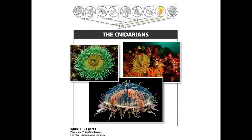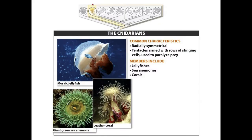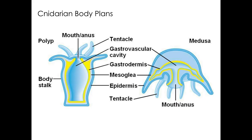Another group of invertebrates are the cnidarians, which include sea anemones, corals, and jellyfish. This phylum includes about 11,000 species. The animals all have defined tissues and radial symmetry, and are generally simpler than bilaterally symmetrical invertebrates. There are two types of cnidarian bodies: a sessile polyp and a free-floating medusa. In some species, individuals spend part of their life cycle as a polyp and part as a medusa, but there are species like corals and sea anemones that exist only as polyps.